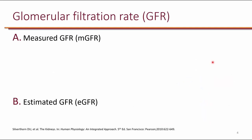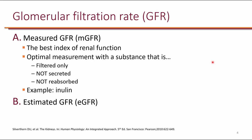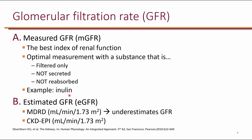The best way to assess renal function is to measure glomerular filtration rate, or GFR. You can either measure GFR or estimate it using equations. Measured GFR is the best index of renal function, using a substance that is filtered only and not secreted or reabsorbed. Inulin is clinically available and used primarily by nephrologists, but it is not routinely used in clinical practice because it's expensive and not readily available. Therefore, we often estimate GFR using equations, including MDRD and CKD-EPI.